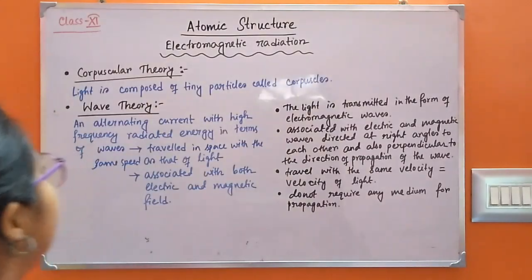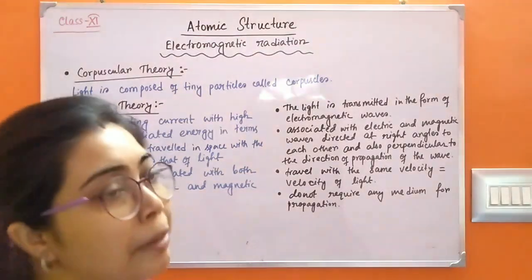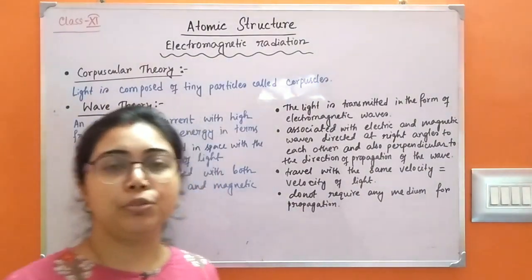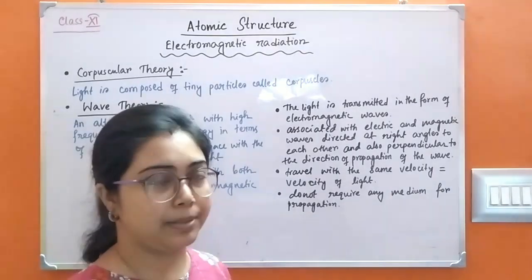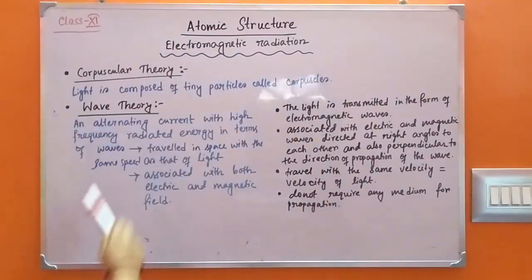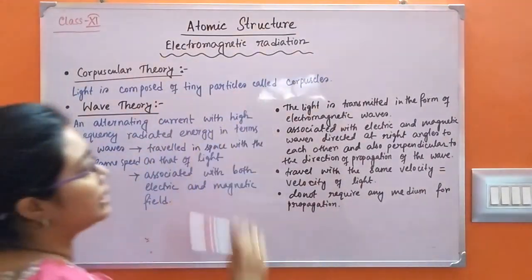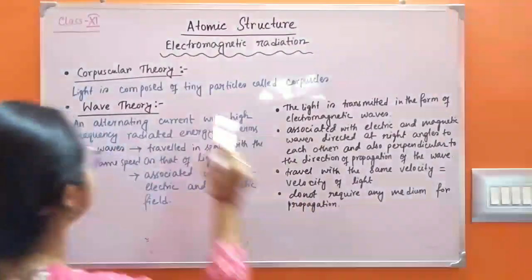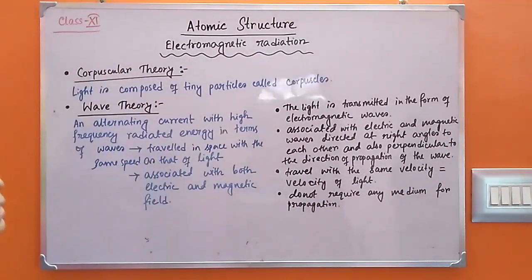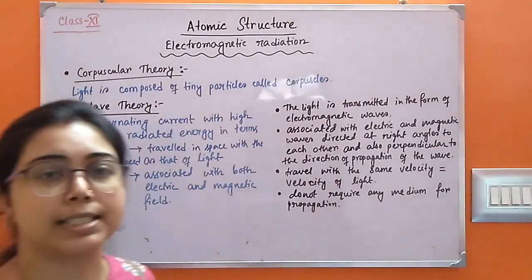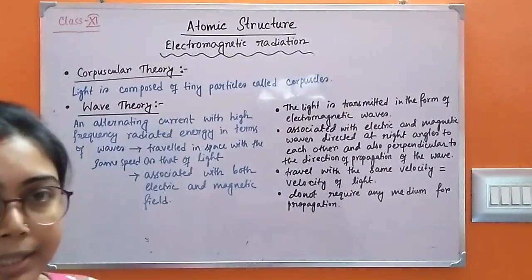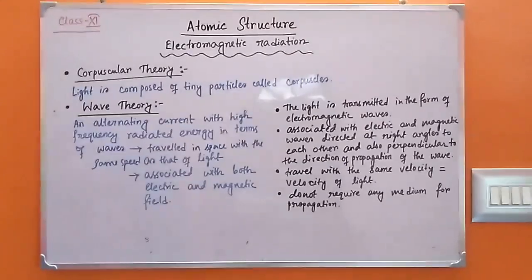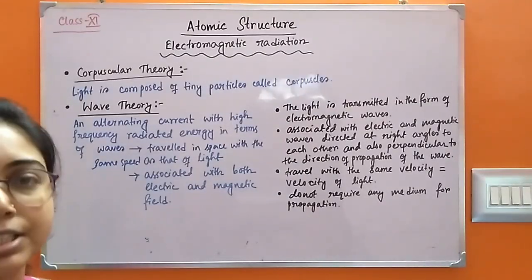In this class, we will discuss about electromagnetic radiation. First of all, we have to know the nature of light. Light is a particular form of energy. According to Newton, light is composed of tiny particles called corpuscles, and this theory is called corpuscular theory. This theory successfully explained the reflection and refraction of light, but was unable to explain the interference and diffraction of light.